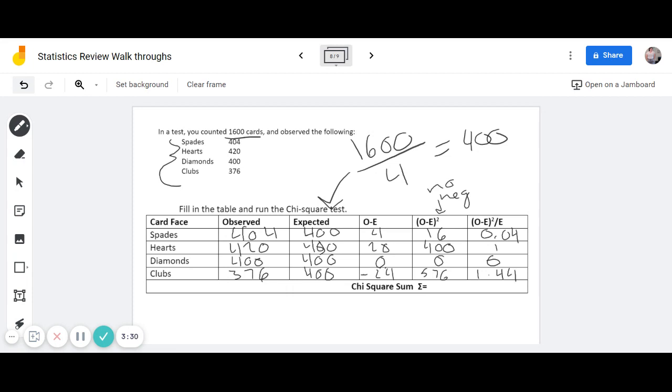Finally, we are going to add all those up. So 1.44 plus 0 plus 1 plus 0.04 gives us a total of 2.48. So our chi squared sum is going to actually be our chi squared value as well. So our chi squared equals 2.48.